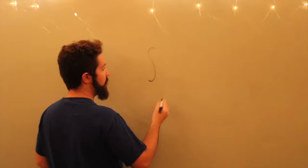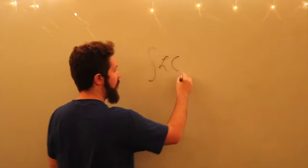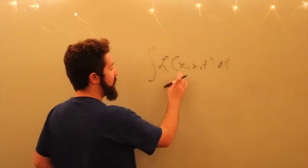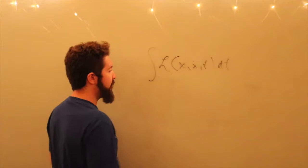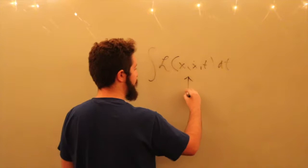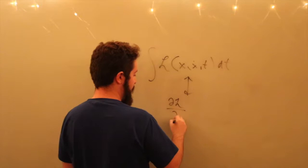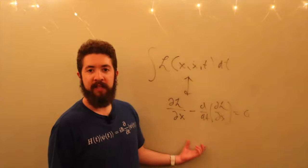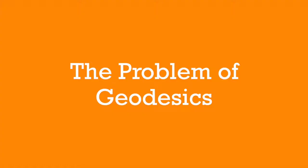Last time we were minimizing an integral or a functional of the form L of x, x-dot, and t, where x is a function of t. This whole integral we call the action. To find the function x which minimizes this integral given boundary conditions, there's a differential equation: the derivative of L with respect to x minus the time derivative of the derivative with respect to x-dot equals zero. This is the Euler-Lagrange equation.